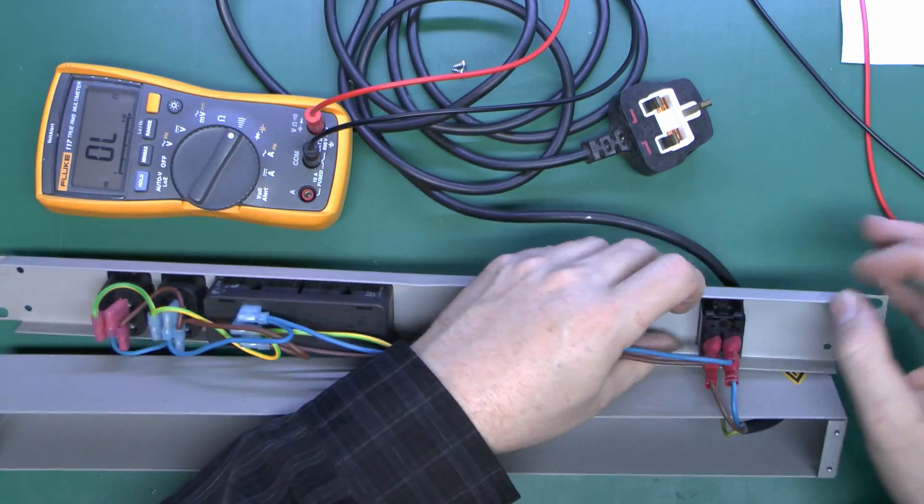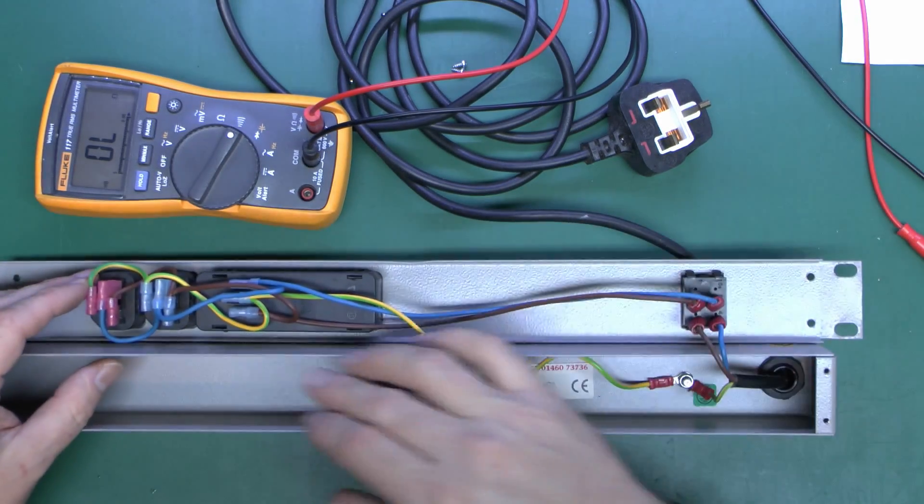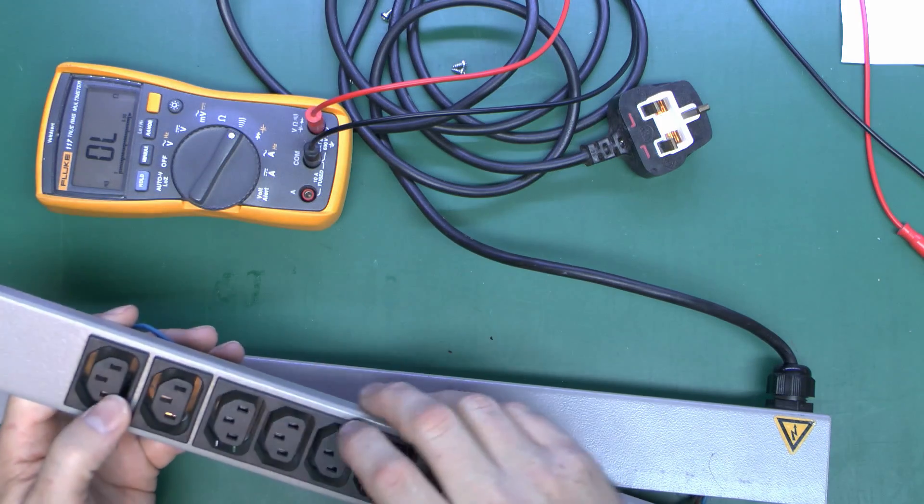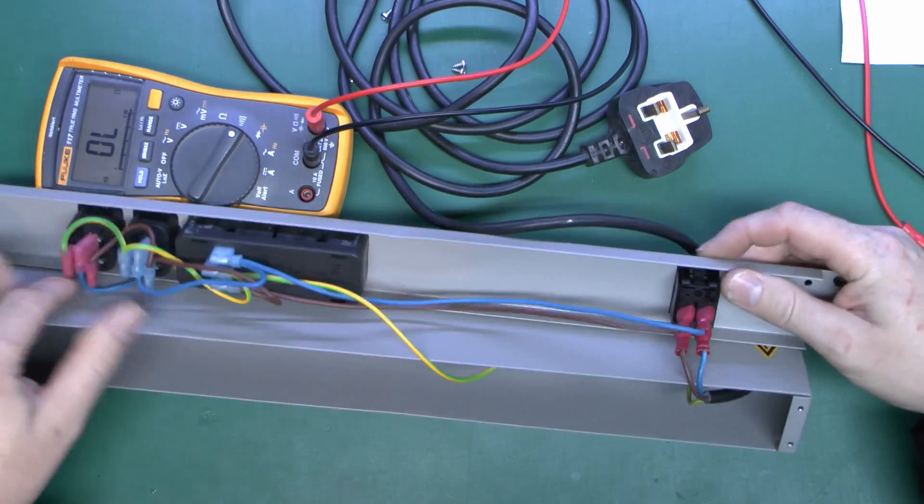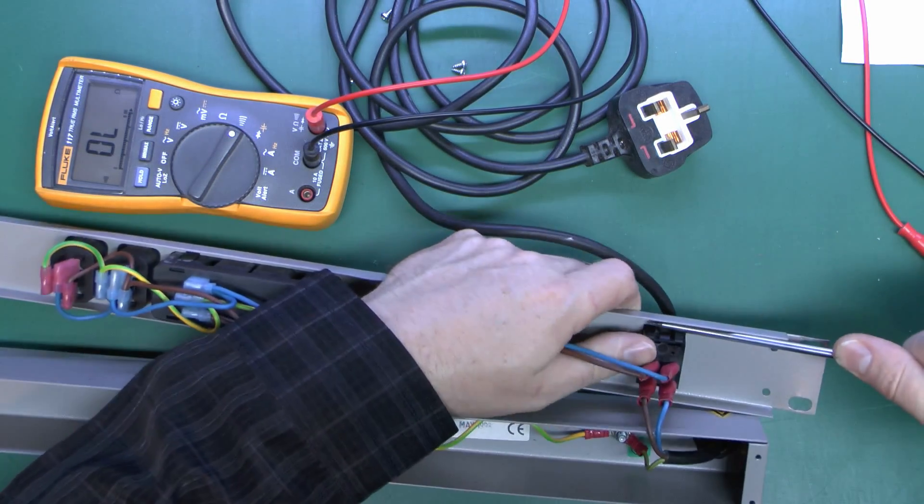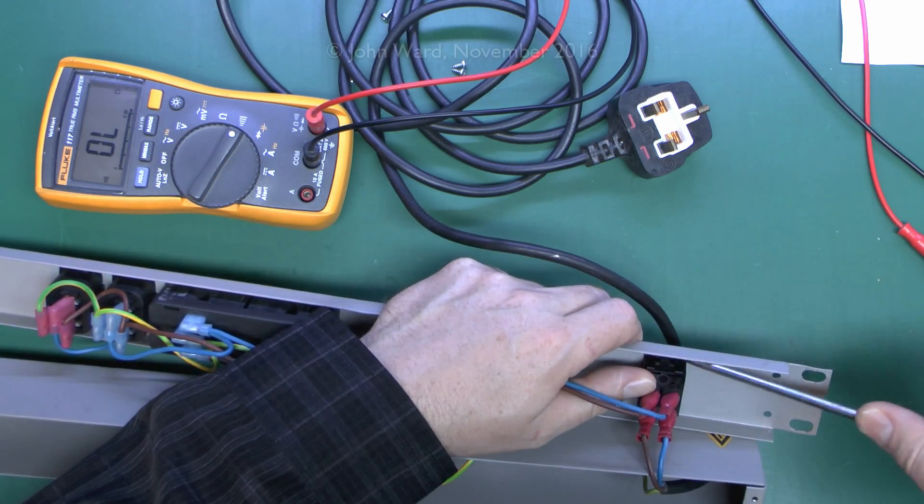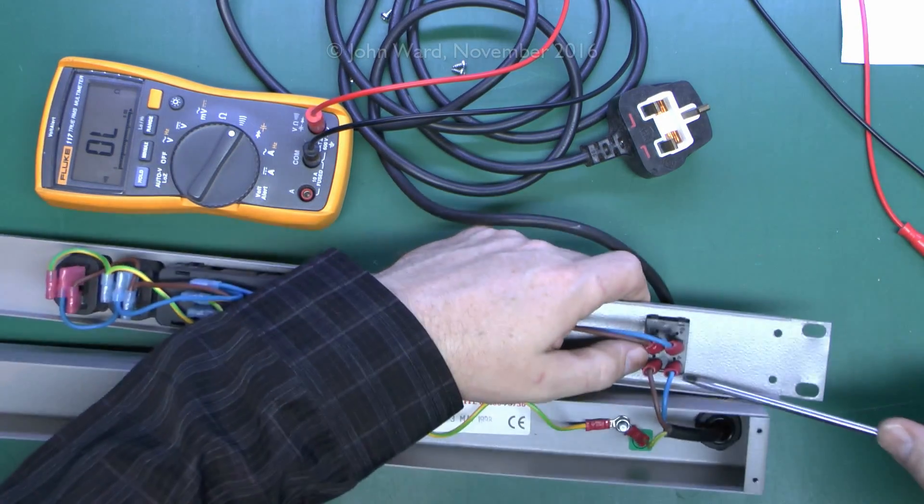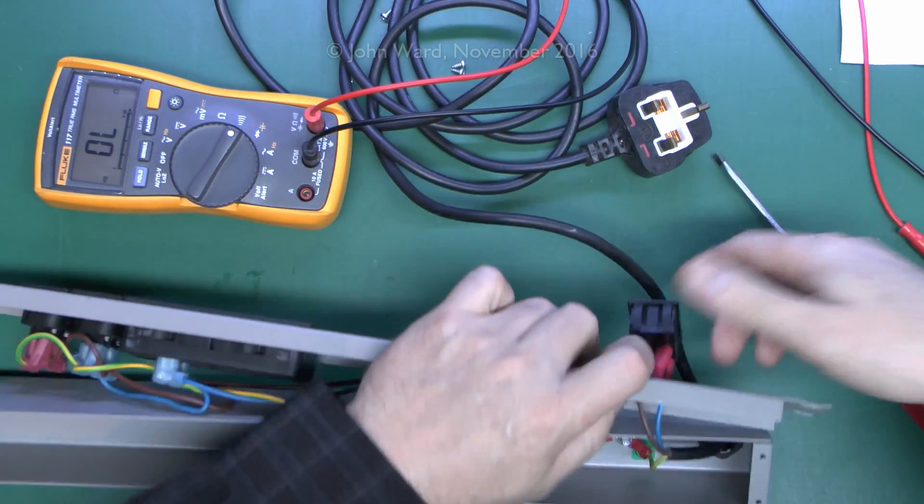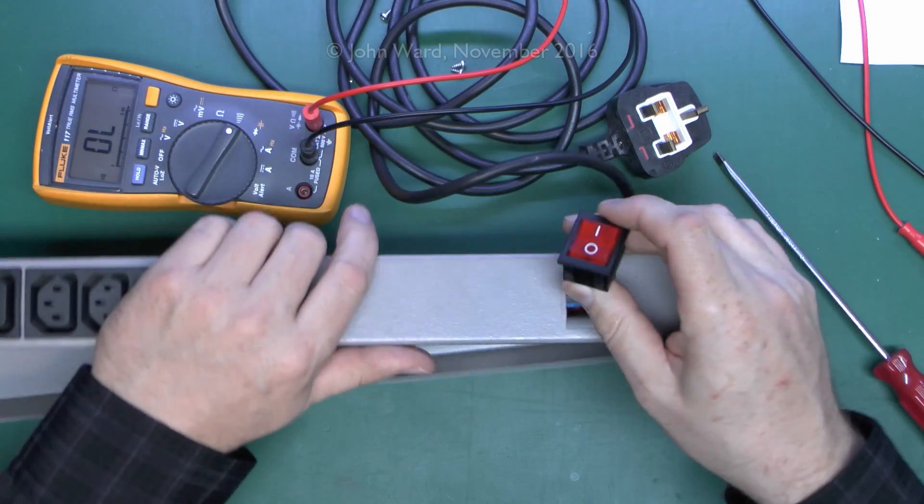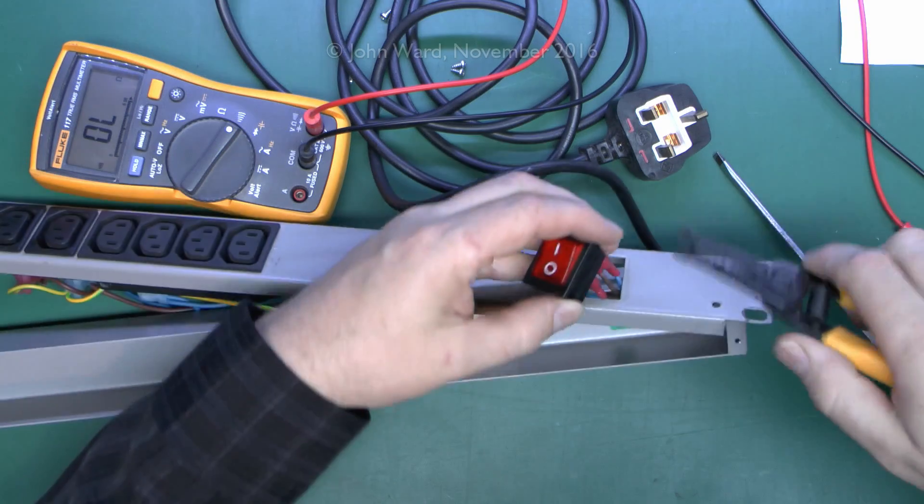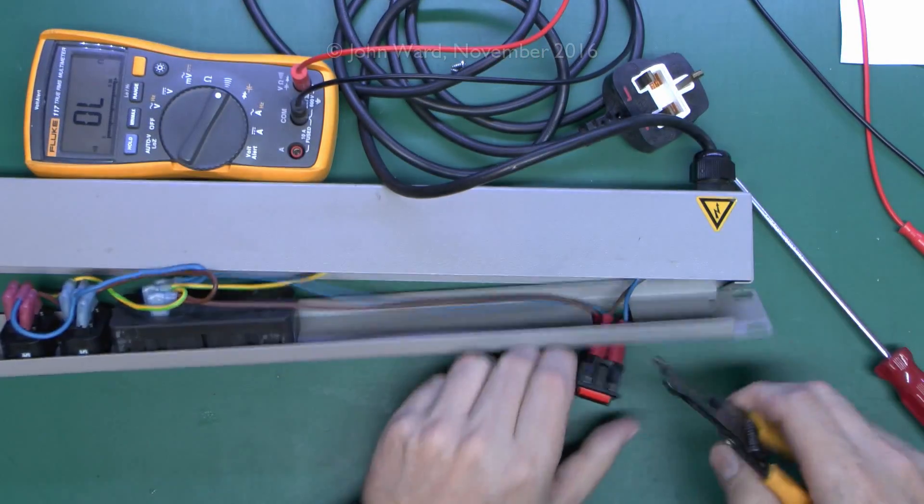So the only thing is if the switch itself has either gone defective or one of the things has internally failed here on one of the connectors, but that's extremely unlikely. So I think we'll just take the switch out and just have a look at that. That was just held in with these sort of spring tabs on either side. So we should just press through fairly easily and pull off the terminals from the back.